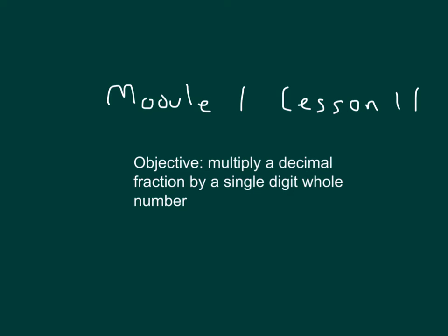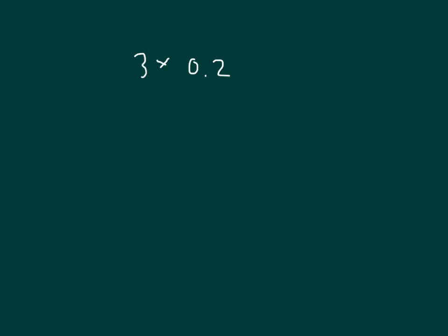The objective is to multiply a decimal fraction by a single digit whole number. The way that we'll figure this out is that we will use a place value chart with ones and with tenths.